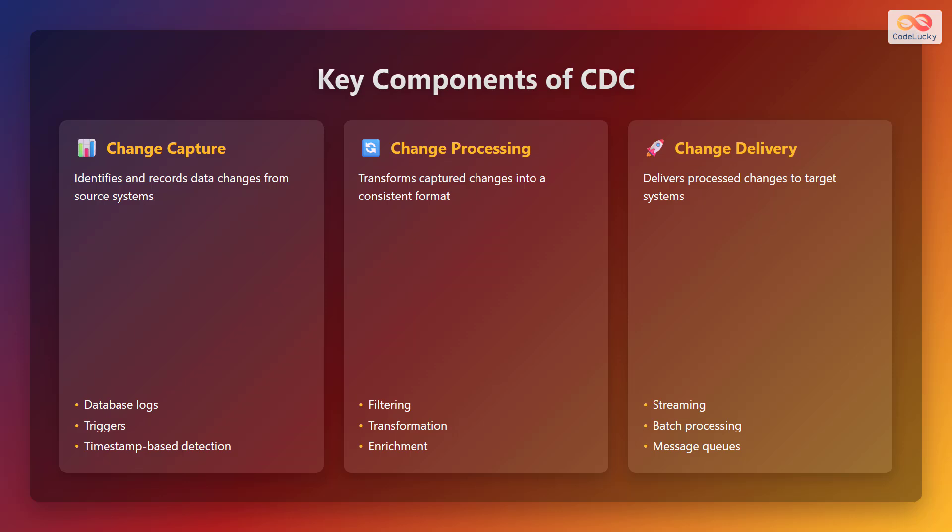Finally, the third component is change delivery. This component delivers the processed changes to the target systems. This can be done through streaming the changes in real-time, batch processing for periodic updates, or using message queues to ensure reliable delivery.